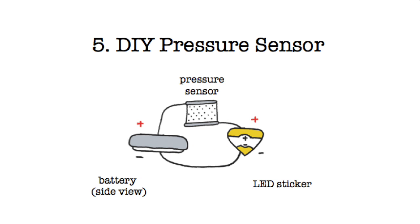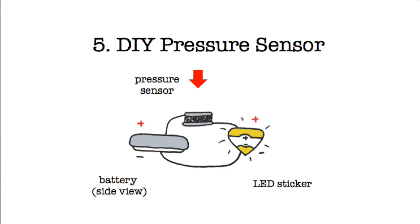In a pressure sensor, instead we bridge the gap with a special plastic sheet with conductive particles in it. The resistance of this sheet, or how well it conducts electricity, changes when you press on it.